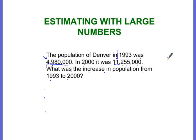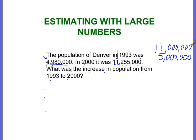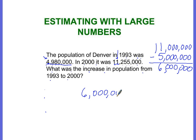So 4,980,000 rounds to 5,000,000. I want you to write out the whole number with all the zeros. And 11,255,000 rounds to 11,000,000. I'm looking for the increase in population, so I'm doing a subtraction problem. 11 minus 5 is equal to 6, so the approximate answer is 6,000,000.